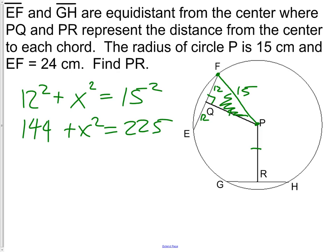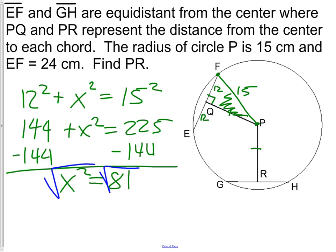Subtracting the 144 to the other side will give us 81, which means x squared is 81. We learned from algebra that when we undo squaring, in this case, we would get x equals positive and negative 9.